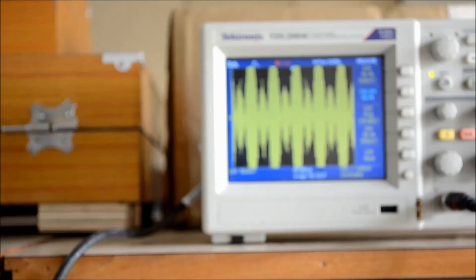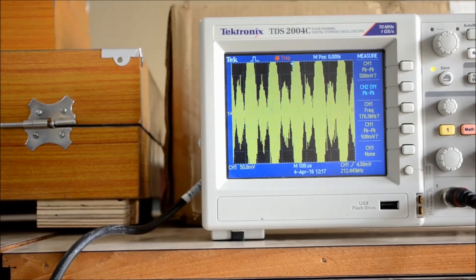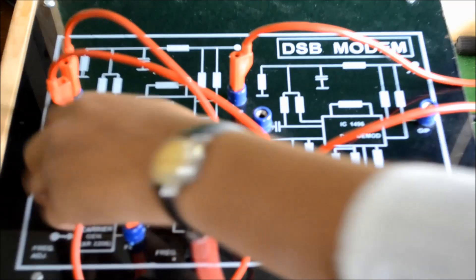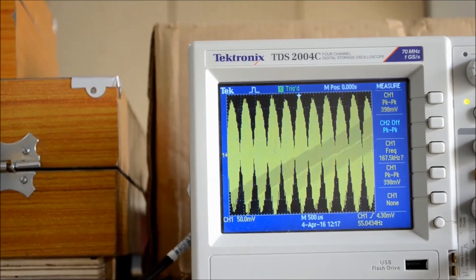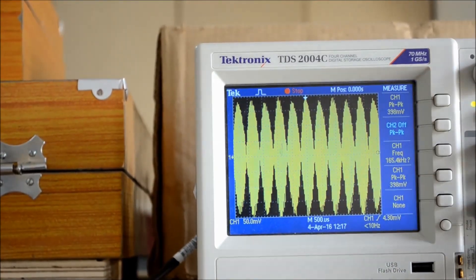To make the proper DSB-SC wave, we have to adjust this carrier adjustment pot so that we will get the proper waveform at the output. We can say that this is the proper DSB-SC wave.